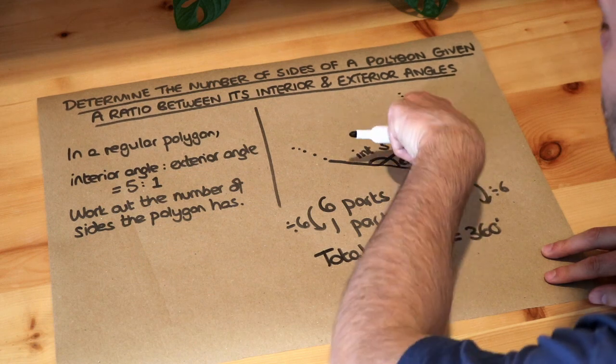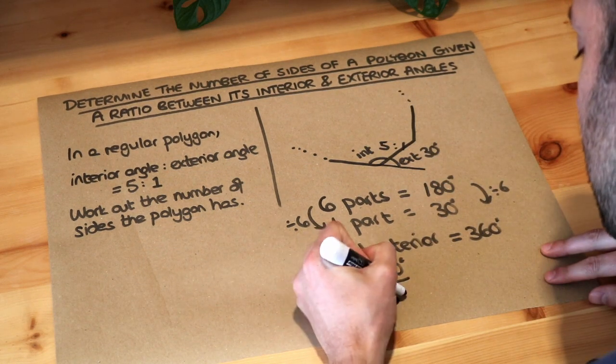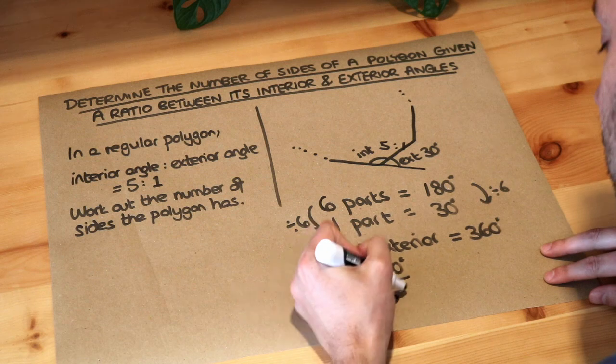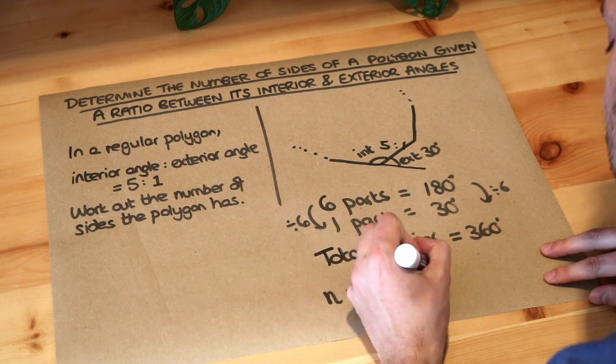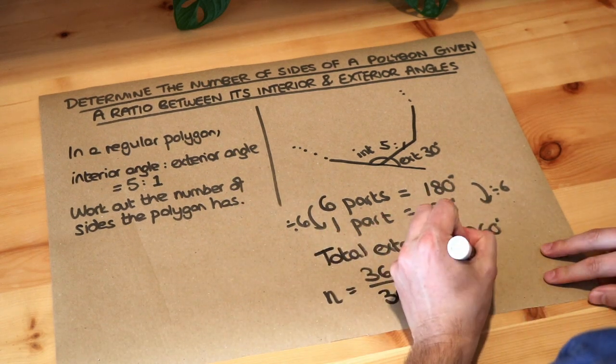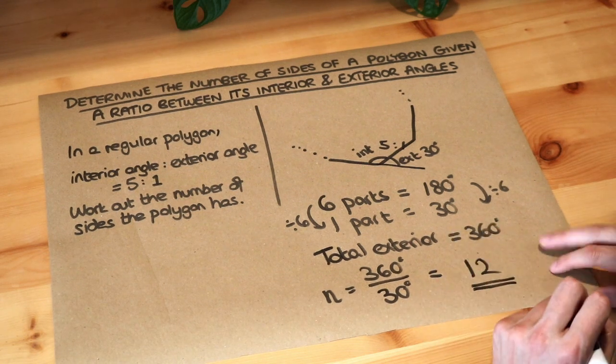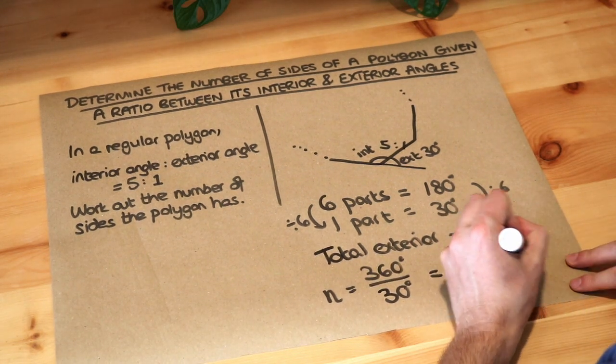So the number of sides n is 360 degrees divided by 30 degrees, and that gives you 12. Therefore, the number of sides is 12 sides.